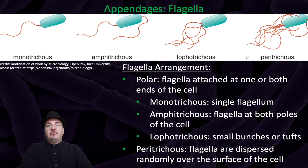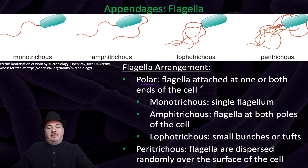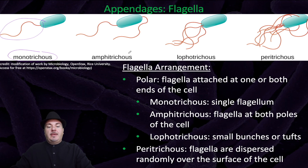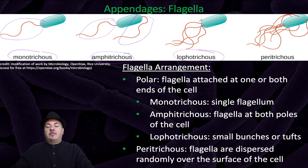The flagella can be arranged on the bacteria in different ways. You can have polar arrangements, which is where the flagella are attached at one or both ends of the cell. Examples of polar arrangements are monotrichous, which is a single flagellum at one end of the cell; amphitrichous, which is flagella at both poles; or lophotrichous, which is small bunches of flagella at an end of the cell.